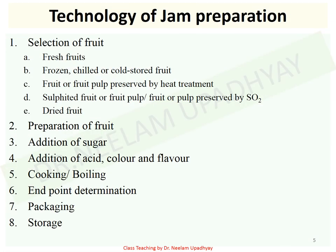Now let's see the technology of jam preparation. The various steps are: first, you have to select the fruit; then prepare the fruit; after selection and preparation, go for addition of sugar; once sugar is added, add acid, color, and flavor; then cooking has to be done; then determine the end point; and finally packaging and storage of the product.